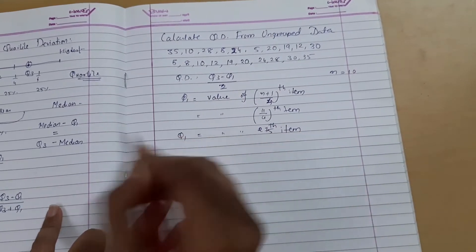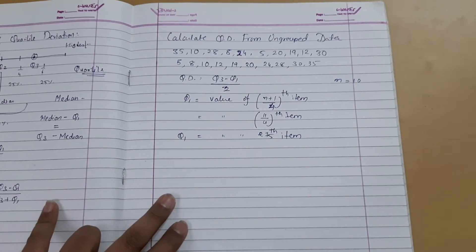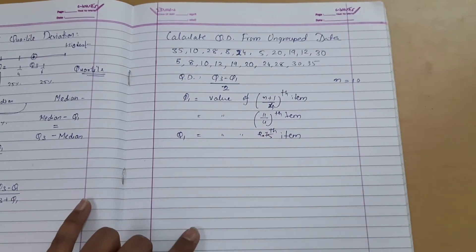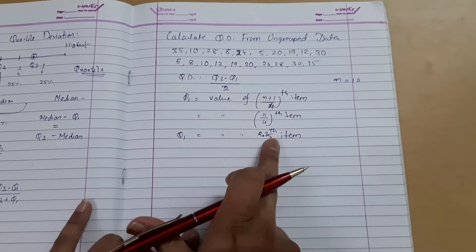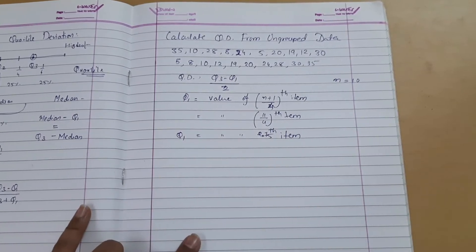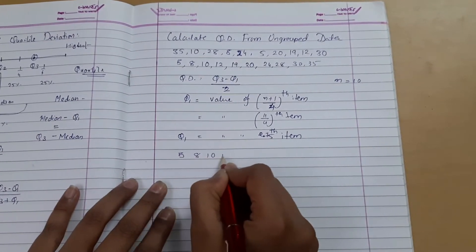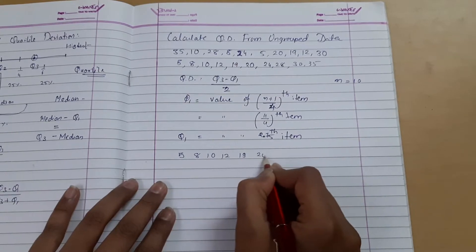So value of (10+1)/4 = 11/4th item. Now if you do 11 by 4, it will give you 2.75th item. Value of 2.75th item means the value at position 2.75.